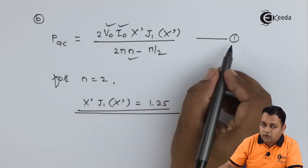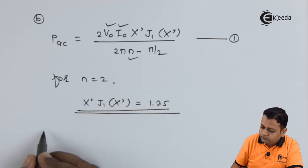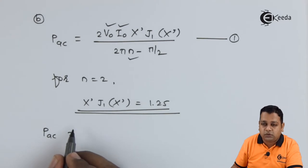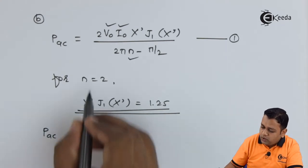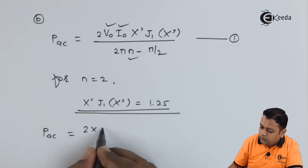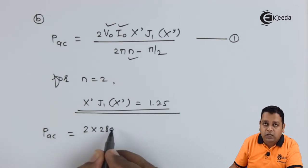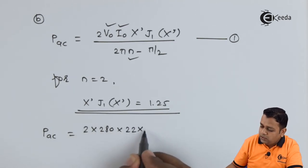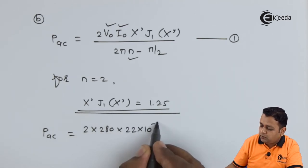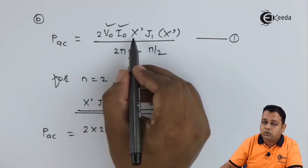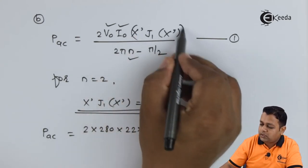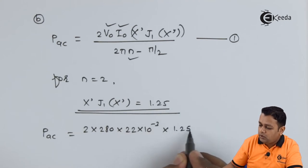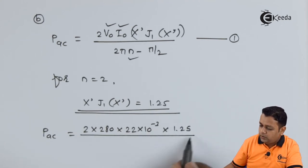Now equation number one will give us P_ac is equal to we substitute the values here: 2 as it is, V0 it will be 280. Then we have I0, I0 is 22 milliampere hence 22 into 10 raised to the power minus 3 into the product of X' with J1 X'. So that we have to substitute 1.25. So it will be divided by 2π into 2 as the first term in the denominator minus π by 2 as it is.